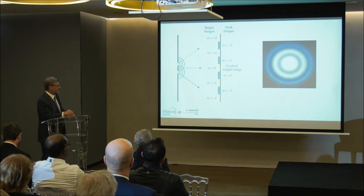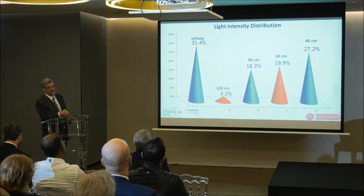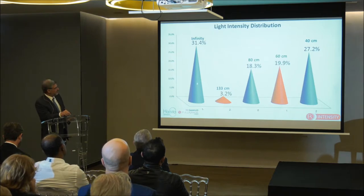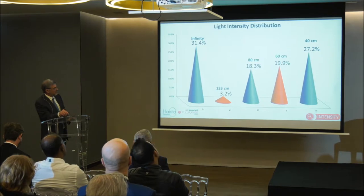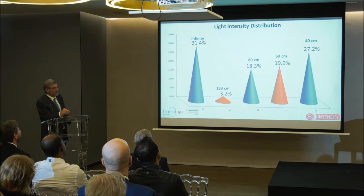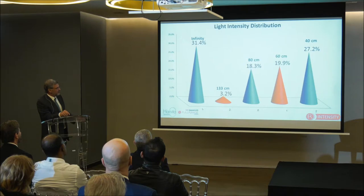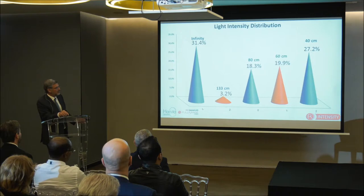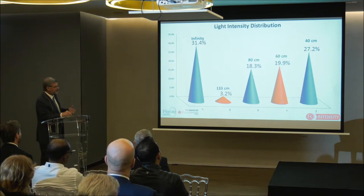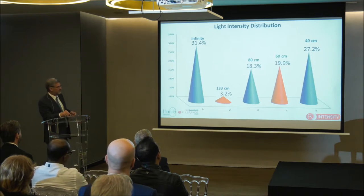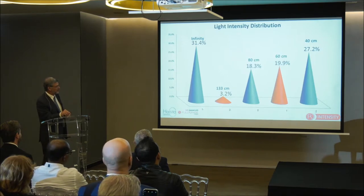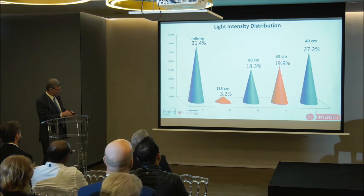In the Intensity lens, the light distribution is rearranged: order zero is assigned to intermediate, while order one goes to far/infinity and another order to near. This means light going to distance is still quite strong and satisfactory. But the most impressive part is the near and intermediate — the light distribution is very effective in this specific lens, with the three foci of far, intermediate, and near, plus the two intensity foci shown here in red.